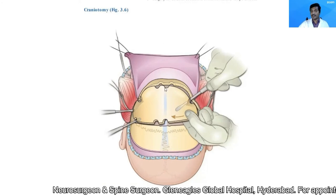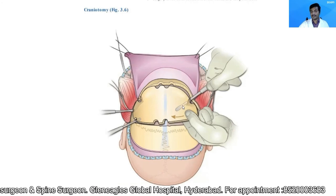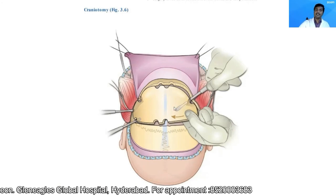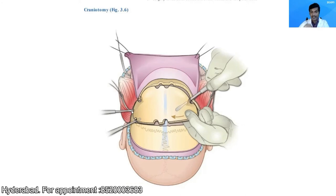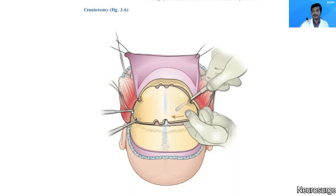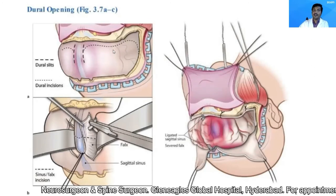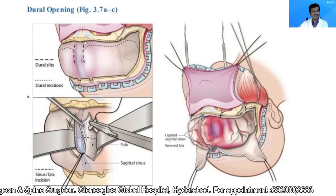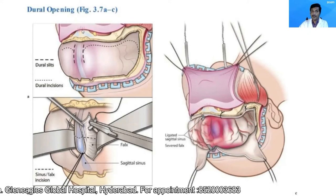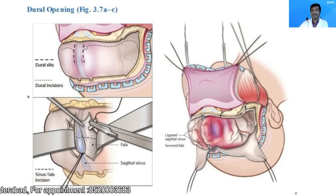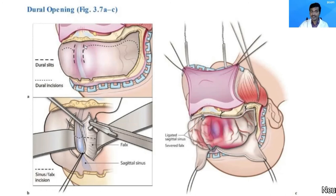Once you have connected the craniotome cuts and closed off or addressed the frontal sinus, reflect the bone flap back. At this point, if you have opened the frontal sinus, I prefer to place a small galea flap over it — that is, I will exteriorize the sinus. Now open the dura mater.